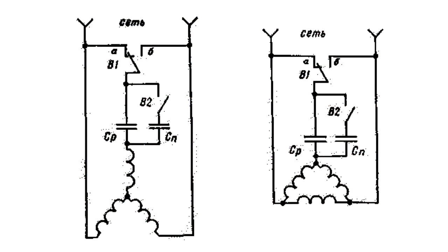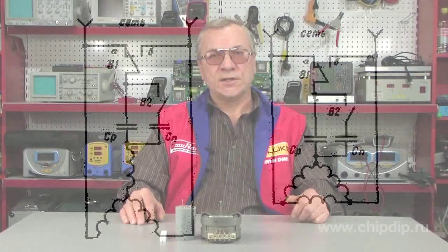Motors with a starting capacitor are also very common. Here a starting capacitor is connected in series with a starting winding in order to improve the starting characteristics. Since the capacitor gets disconnected after start-up, the rest of the motor characteristics remain the same as those of the motor with an increased resistance starting winding.